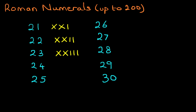24, how do we do that? It is 10, 20 and then the 4 is 1 before 5 or 1 less than 5. So we write down IV. That is 24. How do we write 25? It is 10, 20 and 5. So that is 25.